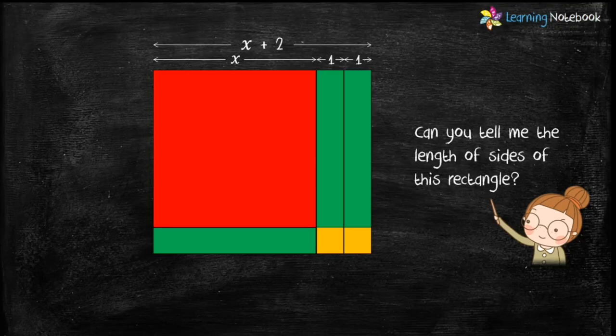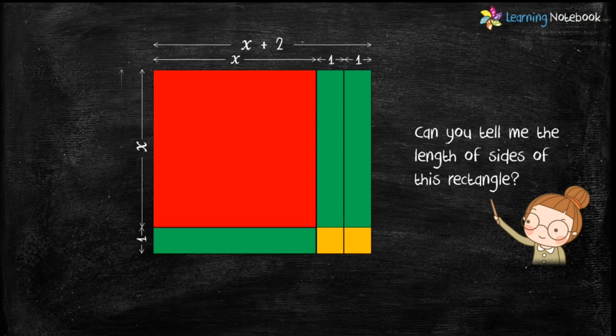Similarly let's see the other side of the big rectangle. It consists of a side equal to x and another side equal to 1. Therefore the other side of this big rectangle is x plus 1.